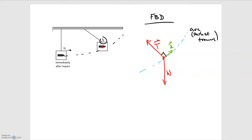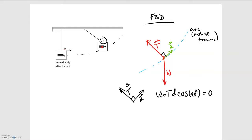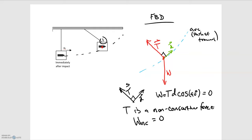Drawing the force diagram: tension points inward, displacement D goes along the arc, and the angle between them is 90 degrees. So work equals tension times displacement times cosine(90°), which equals zero — work done by tension is zero. Even though tension is a non-conservative force, the work done by non-conservative forces is zero. The only other force is the weight force, which is conservative. So we don't have to deal with work done by non-conservative forces, because there is none.